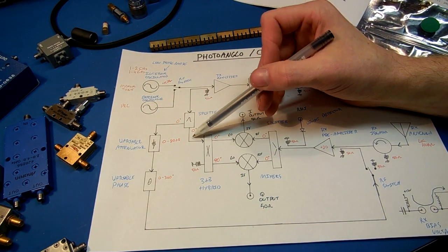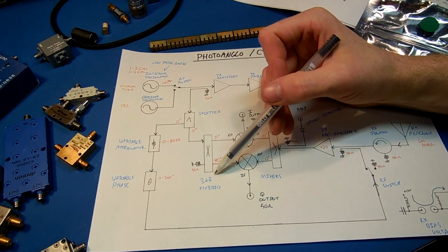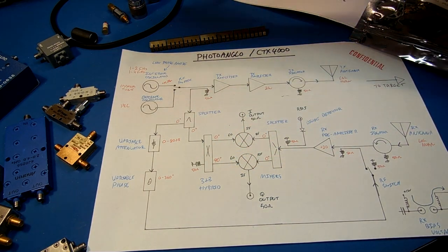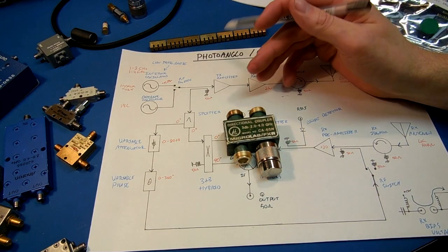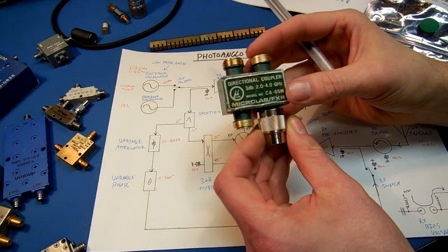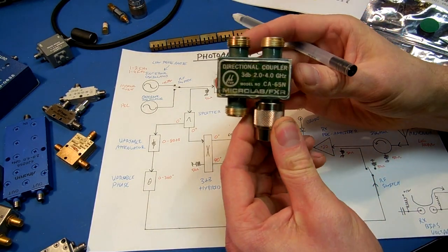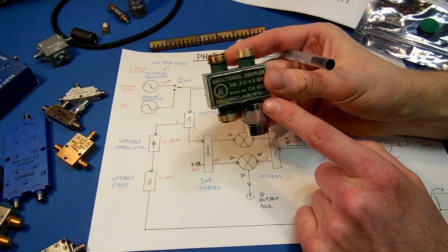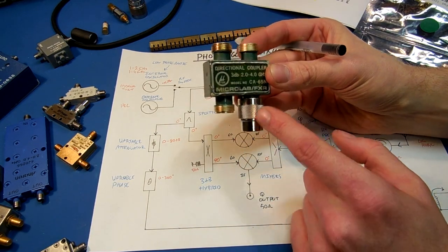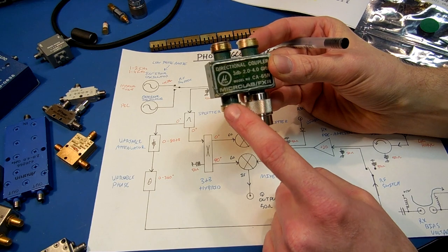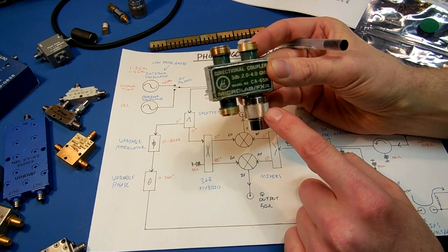The other port of the splitter goes to a device called a 3 dB hybrid. It's basically just a directional coupler. With a 50 ohm terminator on one port. So we have our RF input on this port. Termination on this port.